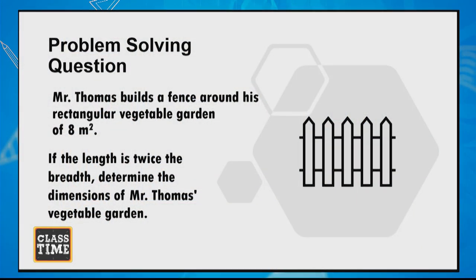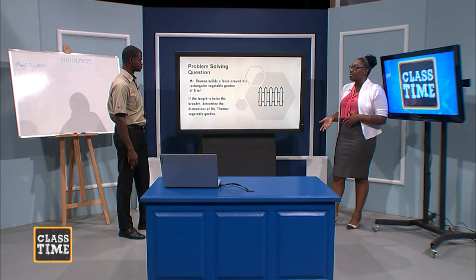Mr. Thomas builds a fence around his rectangular vegetable garden of 8 square meters. Because the length is twice the breadth, determine the dimensions of Mr. Thomas's vegetable garden. This is something that we come across a lot — you have a garden, maybe you have a farm, you need to fence it. These are things we come across in real life. So have you read the question carefully? I've identified my key points: he has a rectangular vegetable garden — so I know the shape. I also know the area, which is 8 square meters. It also told me that the length is twice the breadth. On the second read, you may want to go ahead and underline or highlight or circle the key facts. And one strategy we did not highlight — draw a diagram.